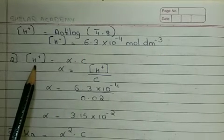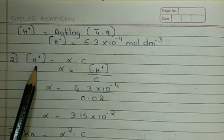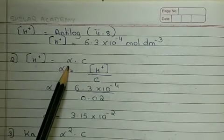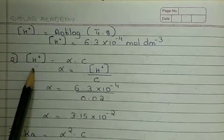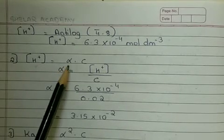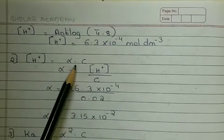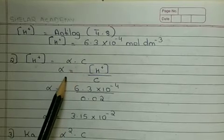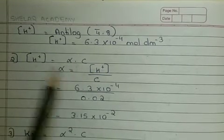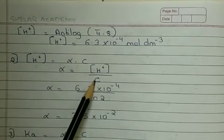After knowing H plus ion value, in the second formula we substitute it to find out alpha. Where the formula is concentration of H plus ion is equals to alpha into C. So by rearranging this formula we can write alpha is equals to concentration of H plus ion upon C.